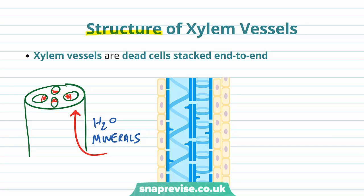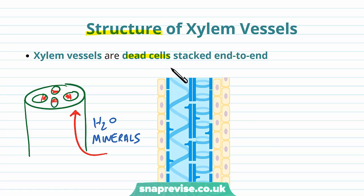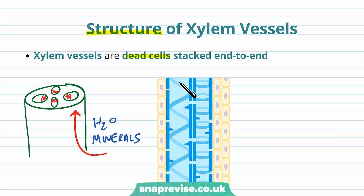In terms of what the vessels actually are, if you think of a vessel as a tube, they're basically a load of dead cells which are stacked end to end to make this tube. The crucial point is that they're not living — they are dead cells that were once alive but are now not doing anything metabolic. These cells stack themselves end to end and form a tube-like structure that runs along the length of the plant, so that the water can pass through quite freely.